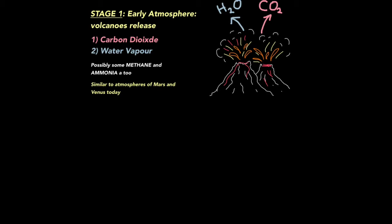Volcanic activity was responsible for basically pumping out carbon dioxide and water vapour into our atmosphere. Mainly carbon dioxide. Possibly some methane and ammonia too. This is very similar to the atmosphere currently existing on Mars and Venus today. What that basically suggests is that when our earth first formed, its atmosphere was very much like Mars and Venus are today.